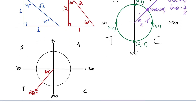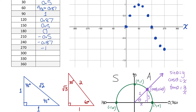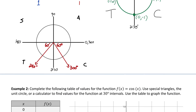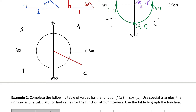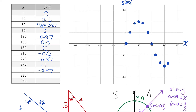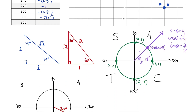Sine of 300, in quadrant 4: rotating 300 is 60 degrees before a full 360. Notice 240 and 300 share the same reference angle, so their sine ratios are both negative 0.87. Sine of 330: rotating 330 is just 30 degrees short of 360, so sine of 330 equals negative sine of 30, which is negative 0.5. Sine of 360 is coterminal with 0 degrees, so sine of 360 equals 0.